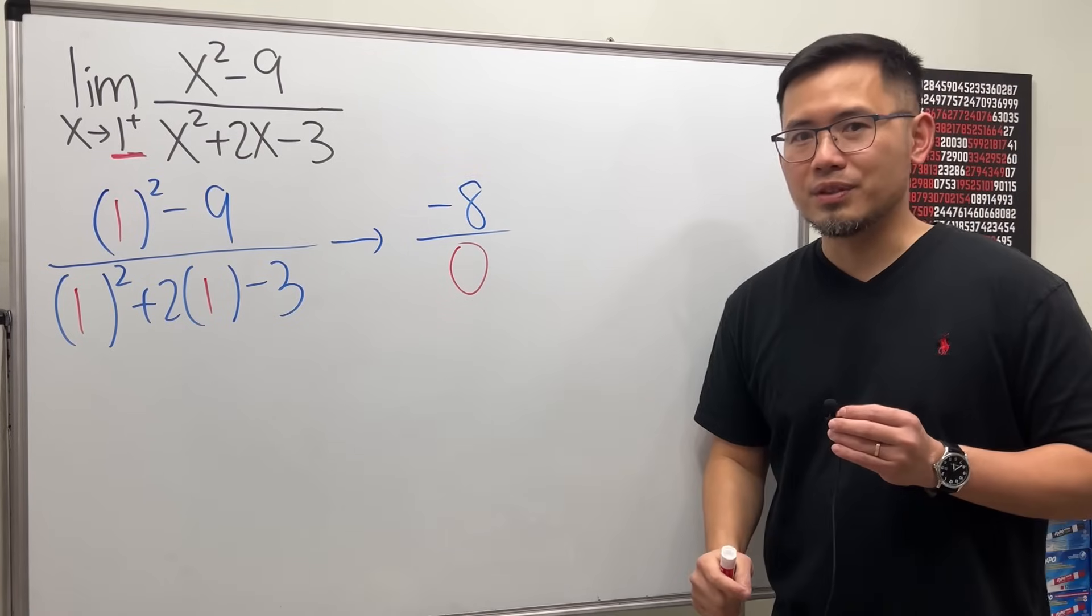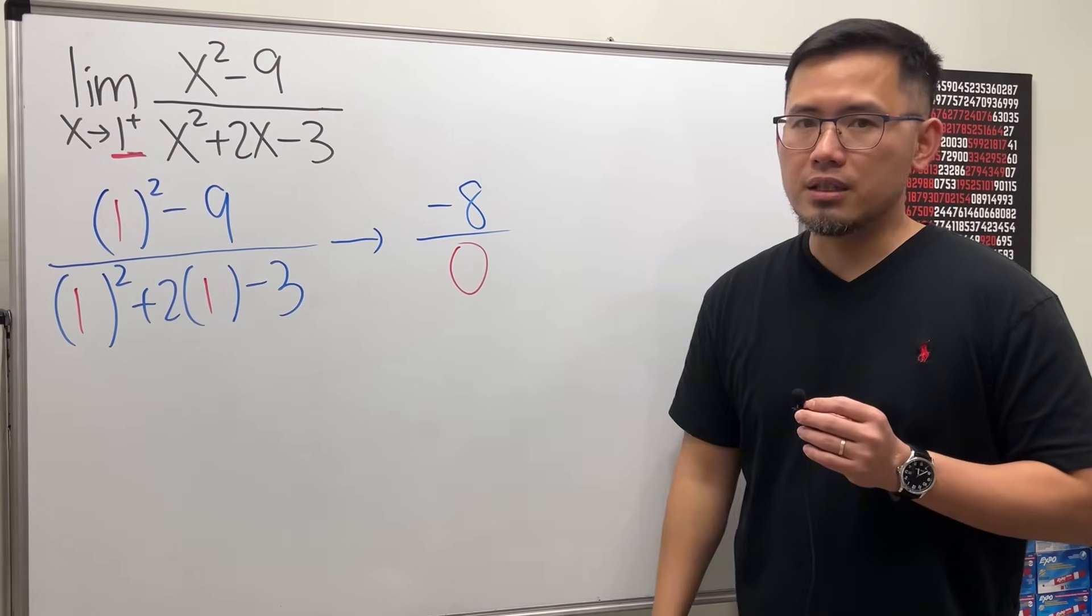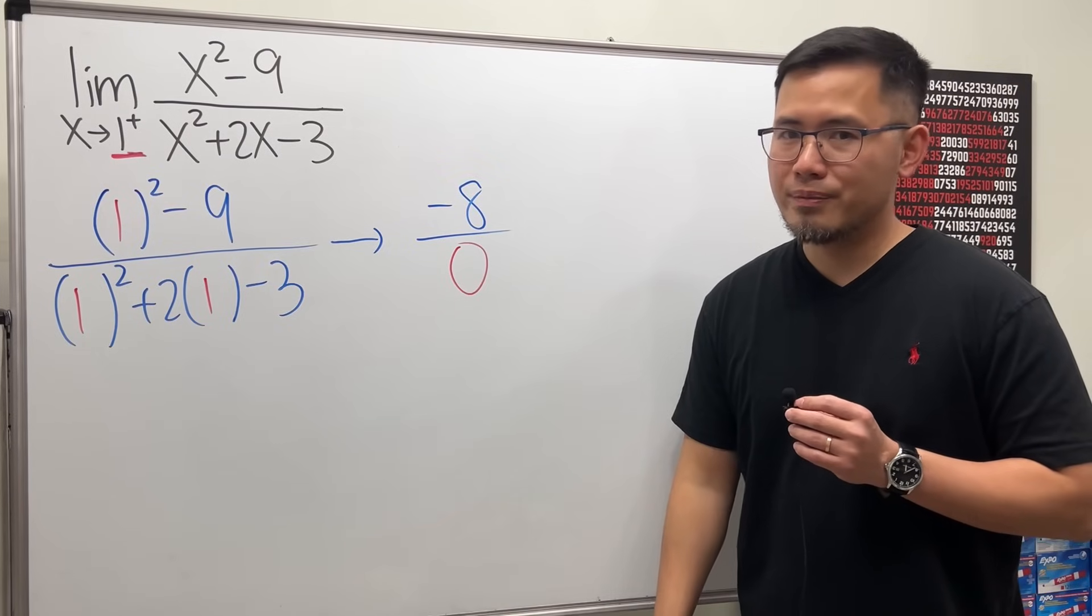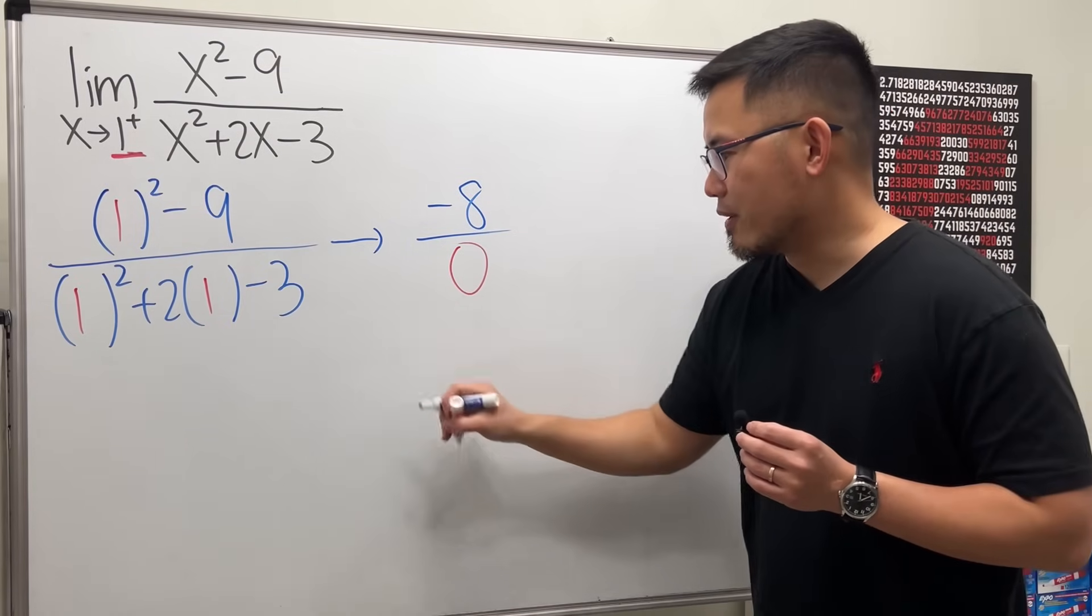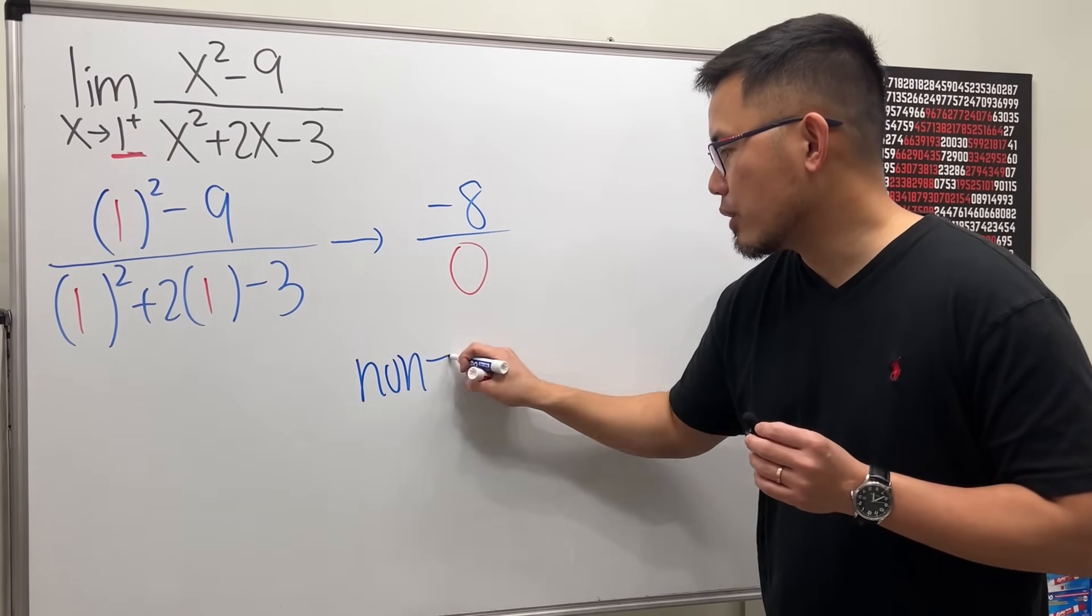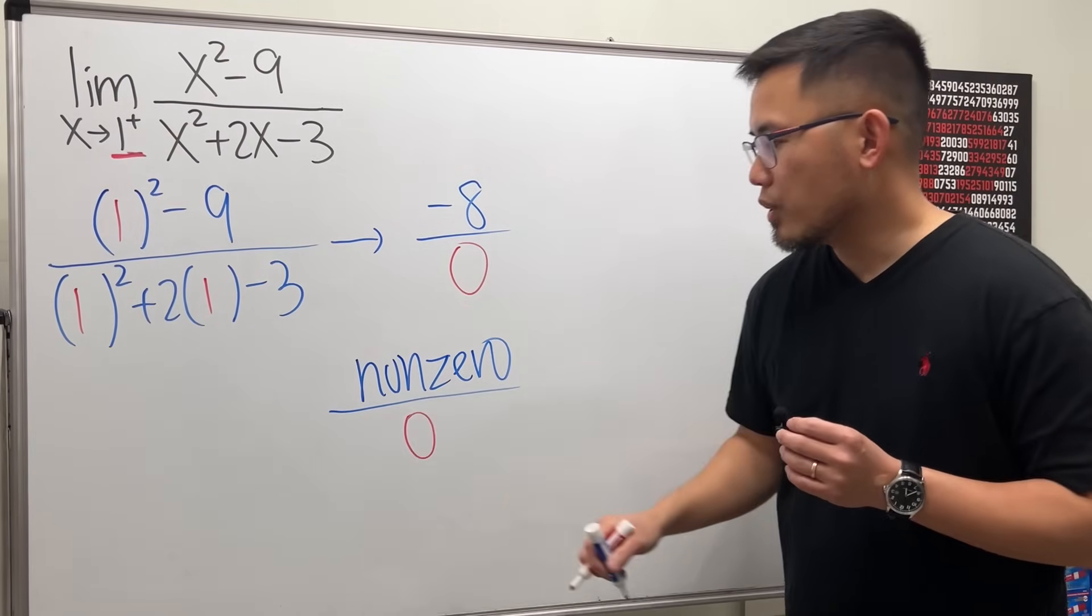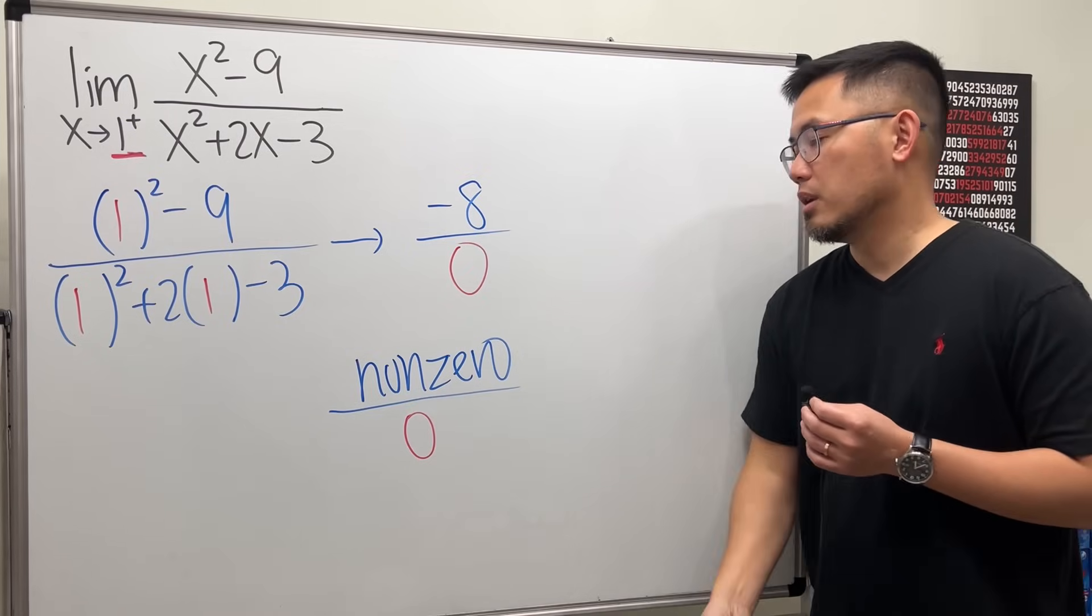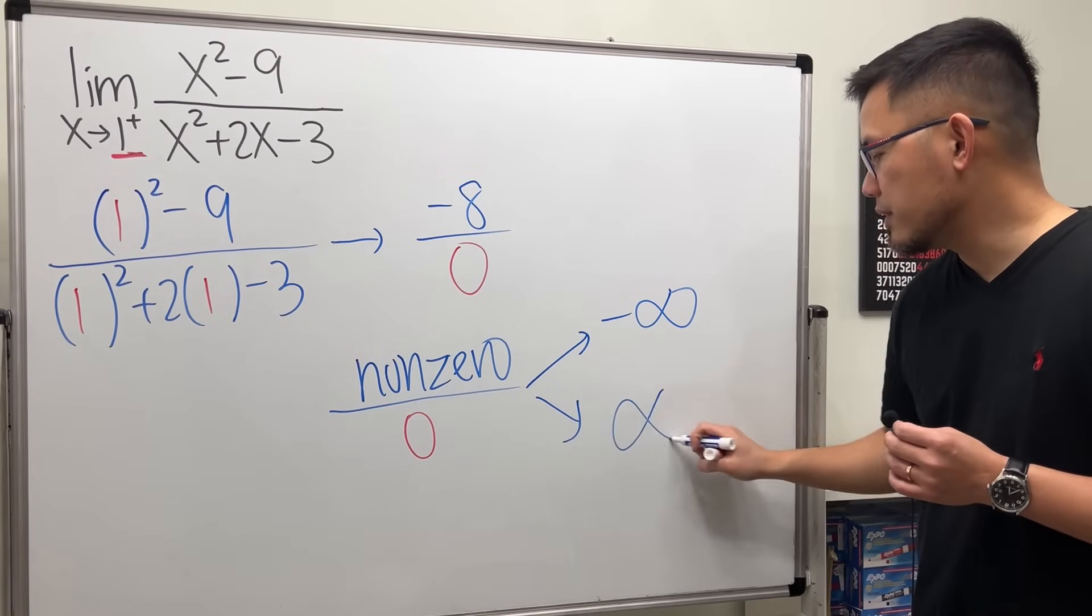What's the response for this? Remember this is a limit question, so do not just put down undefined or doesn't exist right away. But the good news right here is that whenever we have a non-zero number on the top over zero, we know what the result could be. In fact, either we get negative infinity or positive infinity.